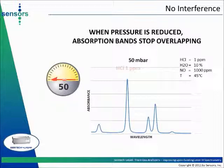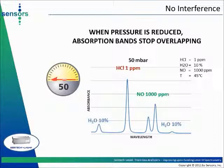In this example, we observe that hydrochloric acid (HCl) can be measured at the sub-ppm level by direct intensity spectroscopy without interference from 10% of water vapor.